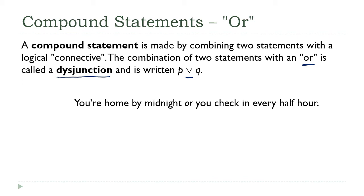So I've got this English statement here: 'You're home by midnight or you check in every half hour,' and what I want to do is translate this into an equivalent symbolic statement. The way I'm going to do that, the first step is always going to be to define your variables. So I'm going to let p be 'your home by midnight' and I'm going to let q be 'you check in every half hour.'